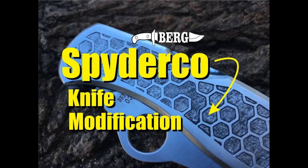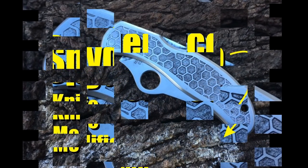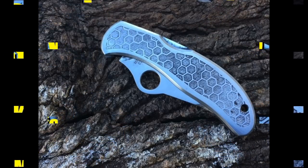Welcome to DIYEasyCrafts.com. In today's video, we are going to modify a Spyderco knife and add honeycomb metal etching.